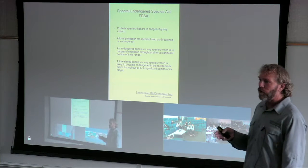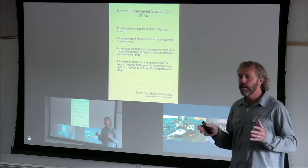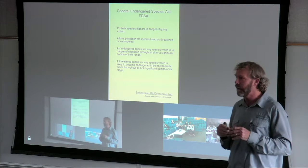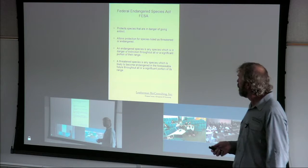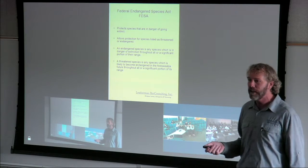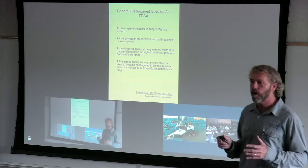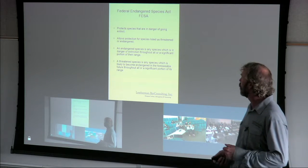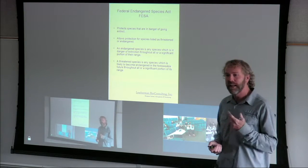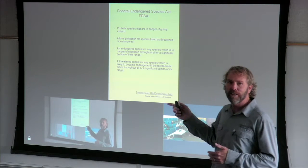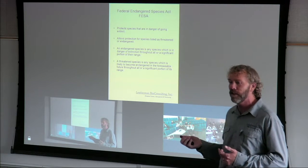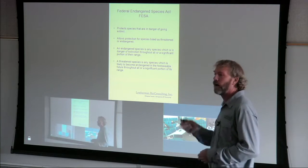Now we'll move on to the federal and state endangered species acts. The Federal Endangered Species Act protects species in danger of going extinct — the whole idea is to identify problems and get species to the point where we can delist them or conserve them so they survive. It allows protection of both threatened and endangered animals. That squirrel and the desert tortoise, for example, are both federally listed as threatened, not endangered.